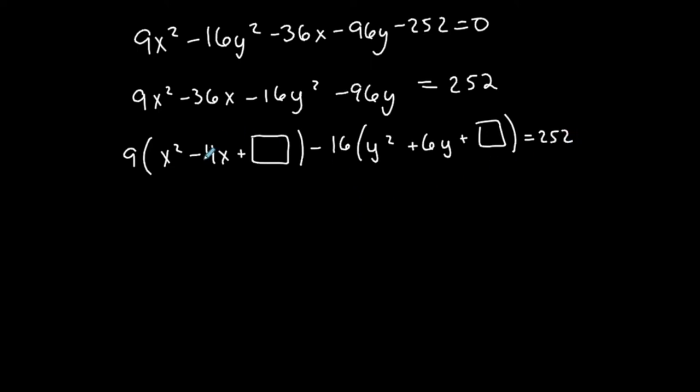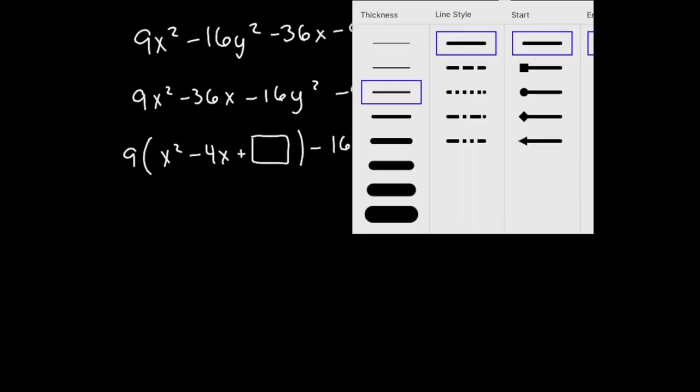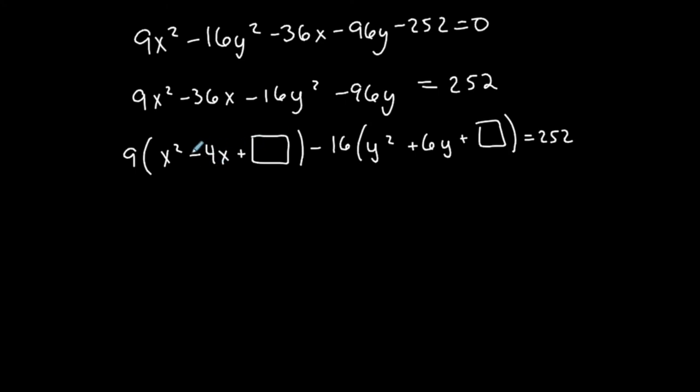So don't forget that I'm factoring out a negative 16. So negative 96 divided by negative 16 is positive 6y plus something to complete that square is equal to 252. If I were to distribute everything back through, technically it's the same thing that I had, correct? Double check that you did that proper. So be careful with the minuses. What goes into my boxes? This box, I take b over 2 and square it. So negative 4 over 2 is negative 2 squared is 4. b over 2, 6 over 2 is 3, square it is 9.